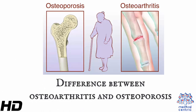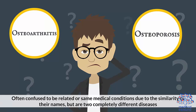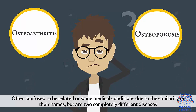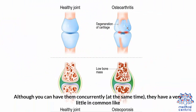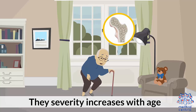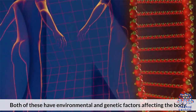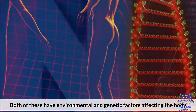Today's topic is the difference between osteoarthritis and osteoporosis. Often confused to be related or the same medical conditions due to the similarity of their names, but they are two completely different diseases. Although you can have them concurrently at the same time, they have very little in common, like the severity increases with age. Both of these have environmental and genetic factors affecting the body.